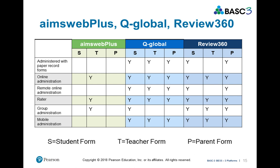This is a helpful matrix that looks at the different types of administrations and the different types of forms — student, teacher, and parent forms — and then the types of administration: paper and pencil, online administration, remote online administration, different types of raters, group administration, and mobile administration. You'll use this type of matrix to determine which platform would work best for your setting.